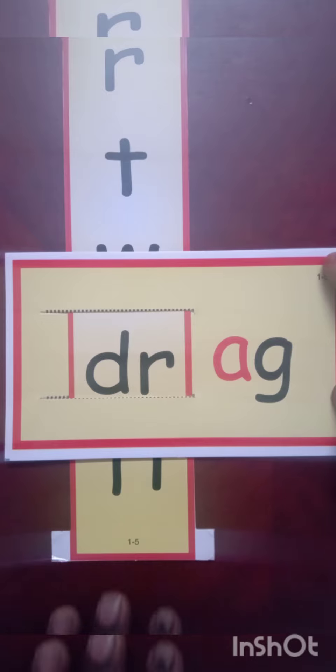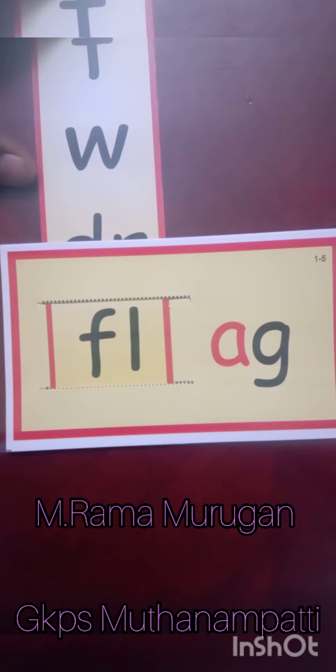The sound of F is f, the sound of L is l, l. So the F, L is fl, fl, fl, ag, flag. F, f, ag, flag.